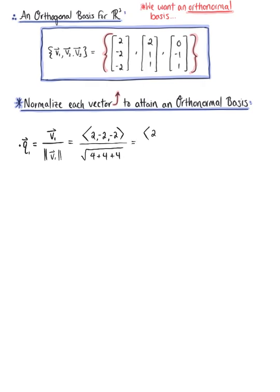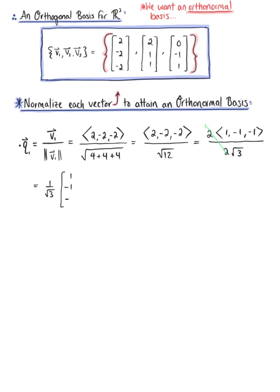We have the vector (2, -2, -2) divided by the square root of 12. Factoring the scalar multiple 2 out of the vector, this leaves us with 2 times (1, -1, -1) divided by 2 times the square root of 3. Simplifying, we have 1/√3 times (1, -1, -1), leaving us with the vector (1/√3, -1/√3, -1/√3).